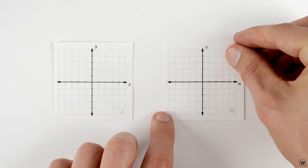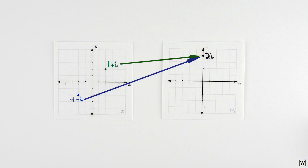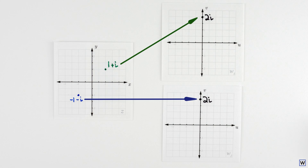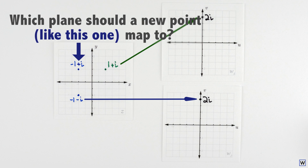Since each point on our w-plane maps to two points on our z-plane, we can begin to resolve our ambiguity by adding a second w-plane, and letting each of our two points on z map to its very own copy of the w-plane. But this immediately raises an important question: how do we pick which z-values to map to each plane?